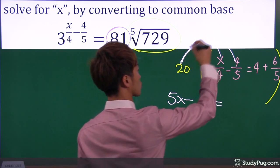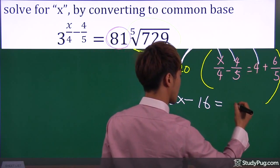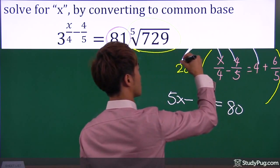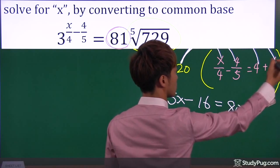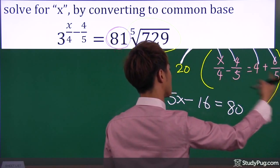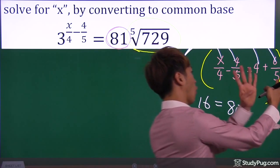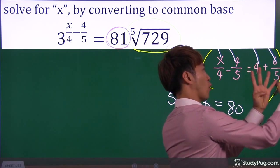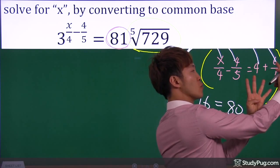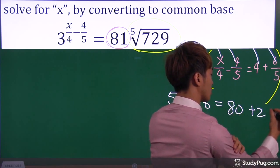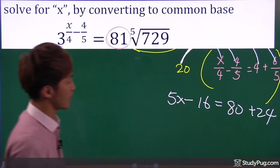So twenty times four is eighty. Now here, twenty times the last number. Twenty divided by five, we have four. And four, we must multiply by six at the numerator. So we have twenty-four.